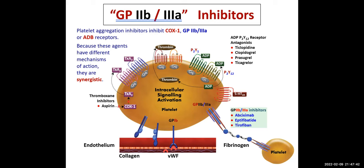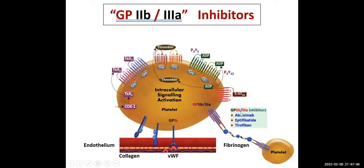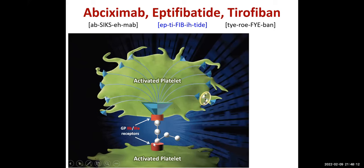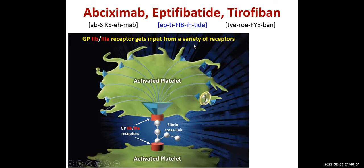We have done aspirin and P2Y12 receptor blockers, and now we look at GP glycoprotein 2B3A inhibitors: abciximab, eptifibatide, and tirofiban. Two activated platelets are cross-linked via GP2B3A receptors through fibrin. Many other platelets attach through these molecules forming a platelet plug. The GP2B3A receptor gets input from multiple activation signals — thrombin receptors, P2Y12 receptors, serotonin, epinephrine, platelet aggregating factor, and collagen.